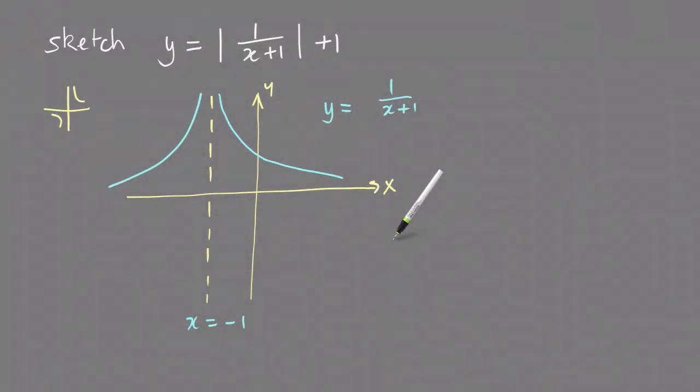So this is now the graph of the absolute value of 1 over x plus 1. And then the last thing that has to be done is add 1, so when I add 1 to the equation, that's going to move that whole graph up 1.